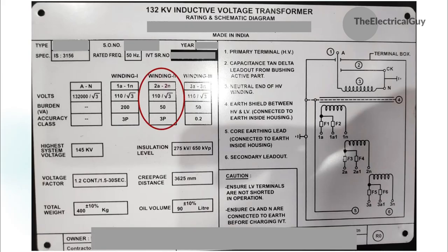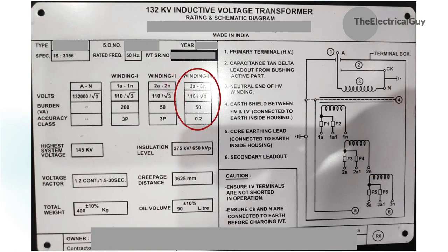Winding 2 is marked as 2A and 2N. It has a secondary voltage of 110V/root 3, a rated burden of 50VA, and an accuracy class of 3P. Winding 3 is marked as 3P and 3N, with a secondary voltage of 110V/root 3, a rated burden of 50VA, and an accuracy class of 0.2. So in total there are 2 protection windings and 1 metering winding.